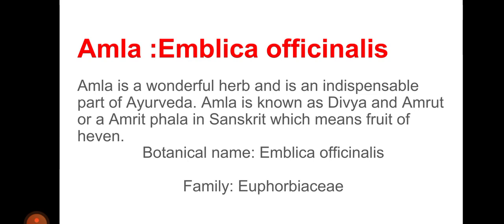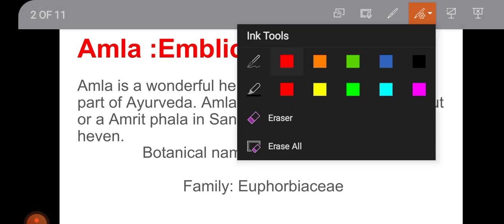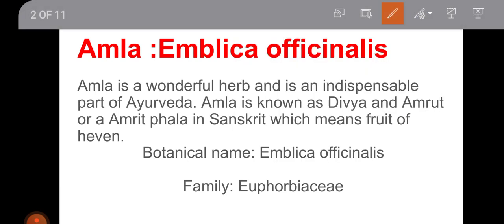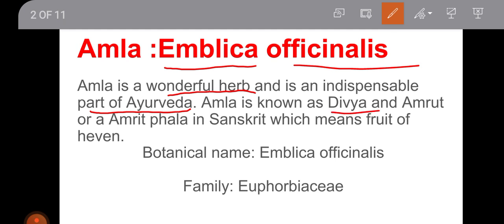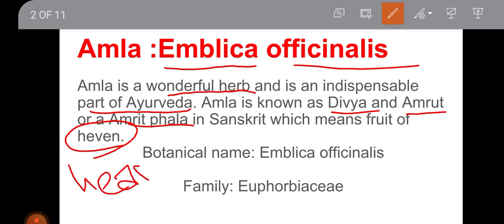My friends, the botanical name of Amla or Aula is Emblica officinalis. Amla is a wonderful herb and is an indispensable part of Ayurveda. Amla is known as Divya and Amroth or Amritphala in Sanskrit, which means the fruit of heaven — H-E-A-V-E-N. Spelling you have to keep in mind.